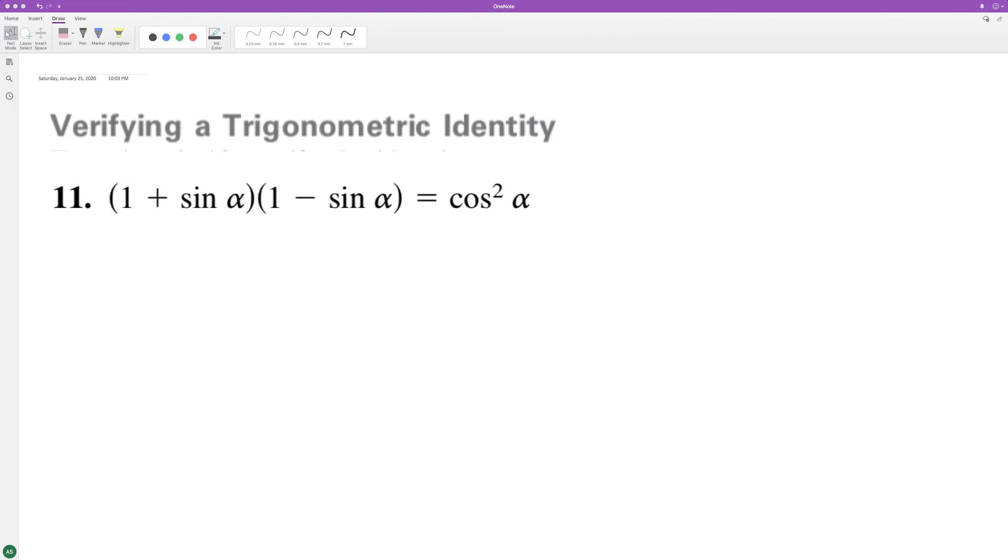By the following trig identity, what we'll do here is FOIL this out. So we'll get 1 times 1, times 1 minus sine theta, plus sine theta times 1, minus sine theta times sine theta, which is sine squared theta. These cancel each other out, and we end up with 1 minus sine squared theta.